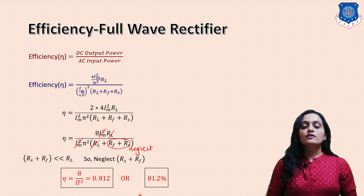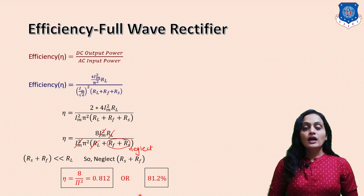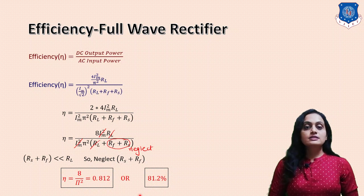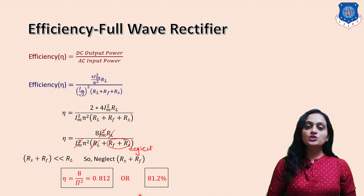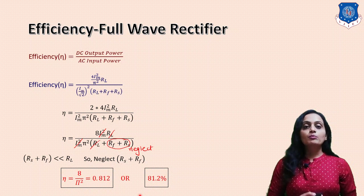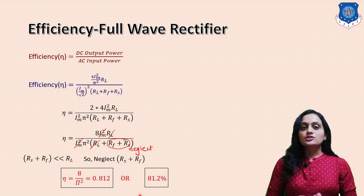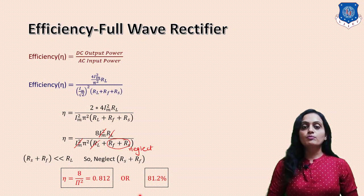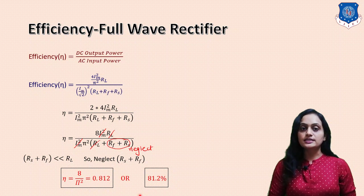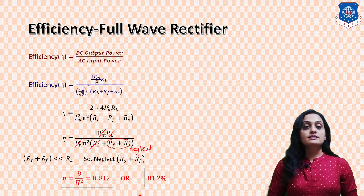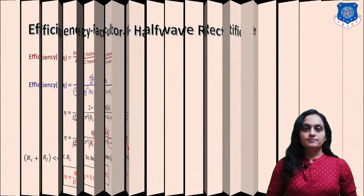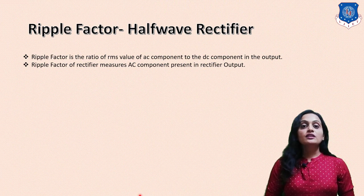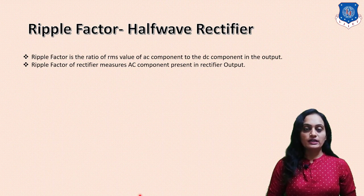So for the full wave rectifier, the efficiency is almost double that of the half wave rectifier and is very high — that's why practically the full wave rectifier is used. Both the full wave rectifier with center tap transformer and the bridge rectifier have the same output voltage and current waveform, so the efficiency for both is the same: 81.2%.